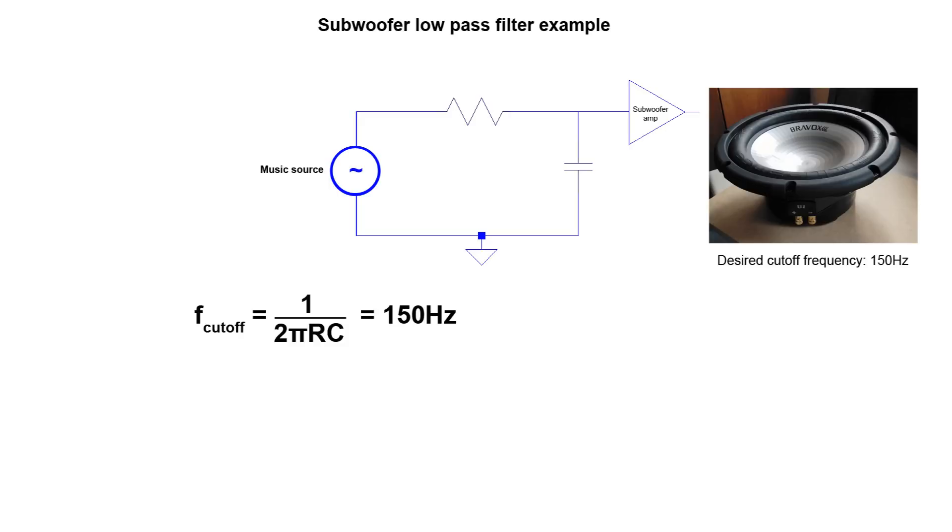Here's the equation again to calculate the cutoff frequency. Now, I can play around with random values of R and C to get the cutoff value of 150 Hz, but from experience I know that I should choose R and then let the equation determine the value of C. I'm going to choose a 1 kOhm resistor because I don't want to overload the audio source.